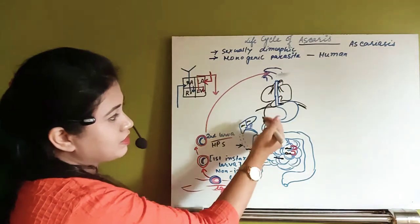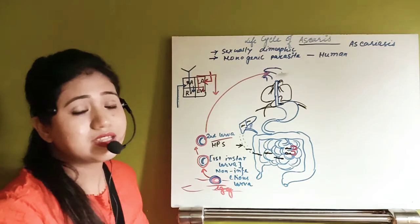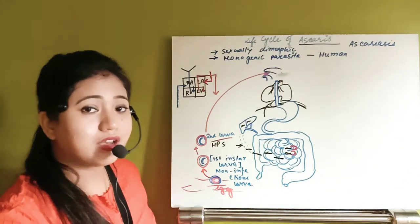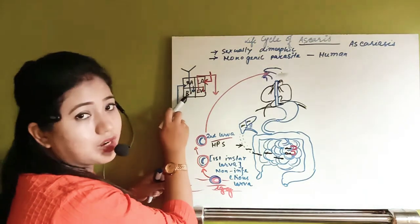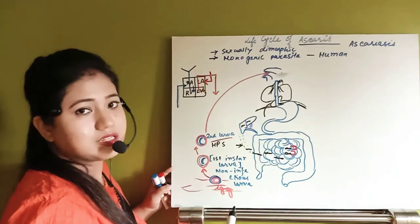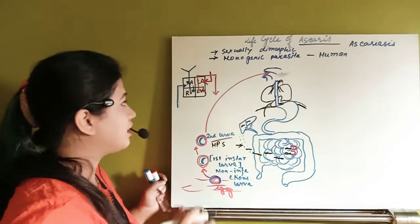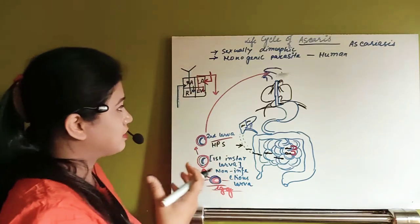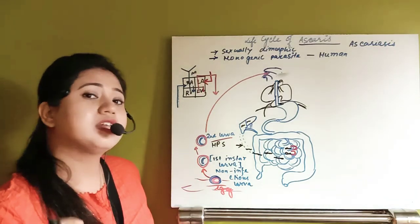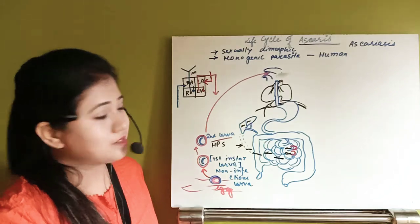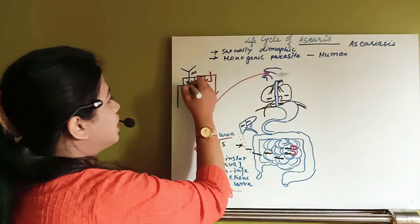The second instar larva travels through the inferior vena cava into the right atrium. From the right atrium, blood is pumped to the right ventricle, and along with the blood, the second instar larva also enters the right ventricle. From the right ventricle, the blood — carrying the second instar larva — is pumped through the pulmonary artery to the lungs.